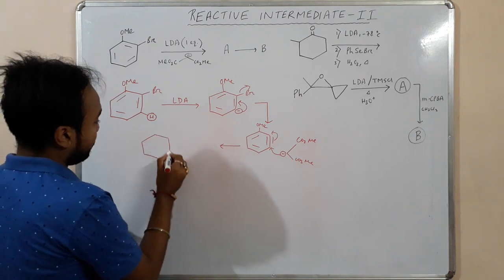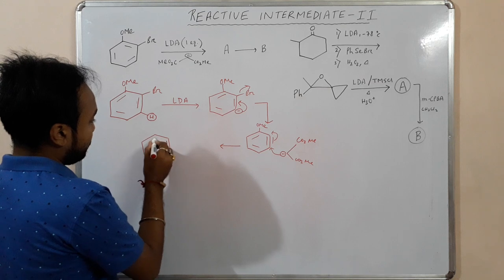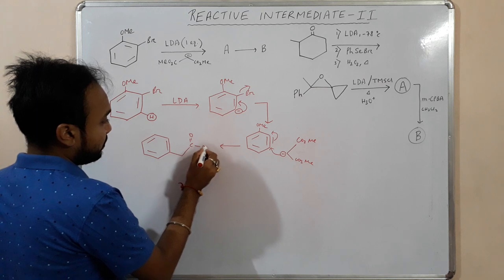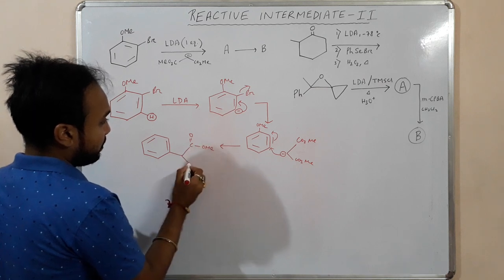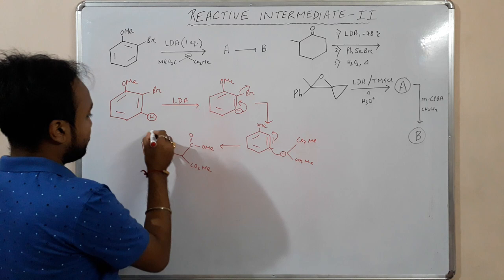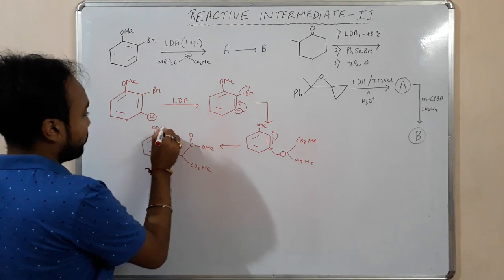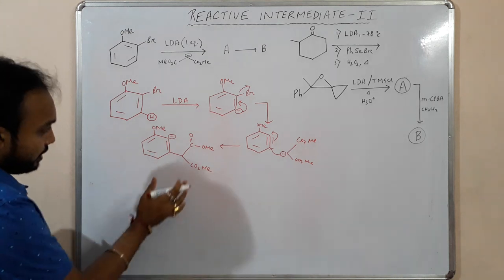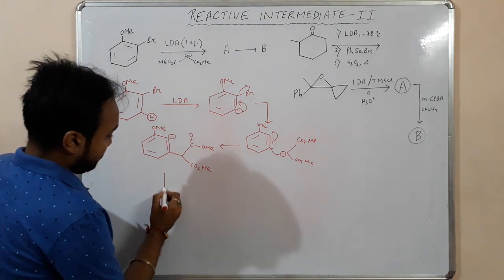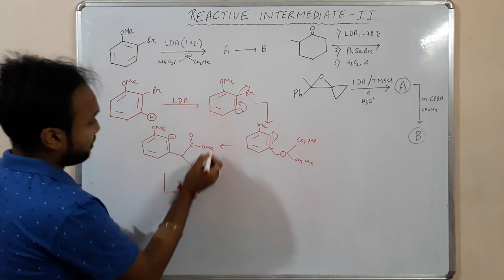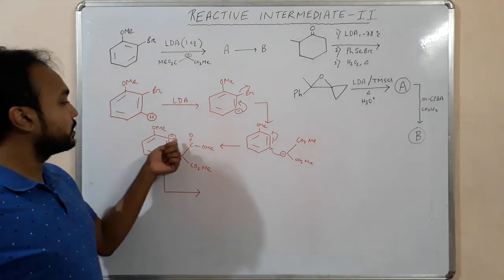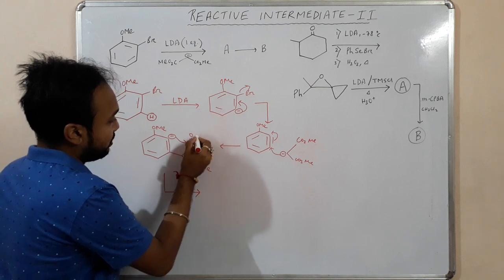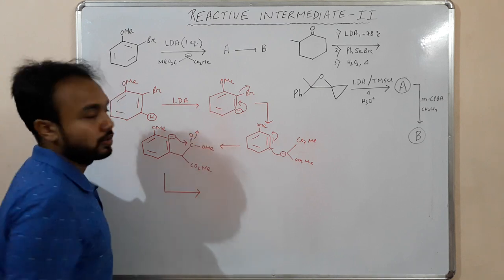If our nucleophile CO₂Me attacks here, the negative charge comes to this position. So this is intermediate A*. The A* ester group is close to this negative charge, so it can easily attack.